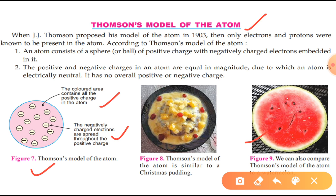Now let's understand the limitations of Thomson's model of an atom. Thomson's model considered an atom to be a sphere of uniformly positive charge. However, Rutherford's alpha particle scattering experiment showed that an atom's positive charge is concentrated in a very small volume at its center.